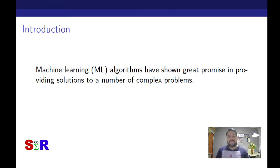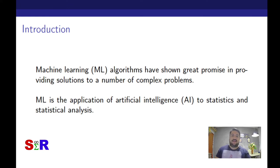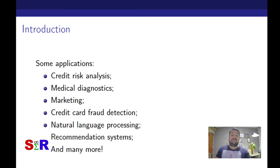There are numerous Machine Learning algorithms, and each one often applies better to certain types of problems. Machine Learning is one of the fastest-growing areas in recent years. It is a field within artificial intelligence that works basically with data, making machines learn from data. Applications include credit risk analysis, clinical and medical diagnoses — for example, a patient with several symptoms can be classified according to their pathology.